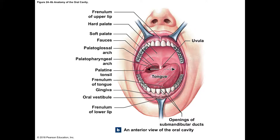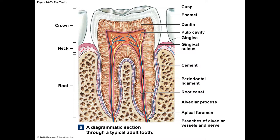Let's look at the teeth. This picture will be on your lab exam so you have to know these structures. The tooth itself is divided into three sections. Anything above the bone is called the crown. Right at the bone is called the neck. Anything below the neck is called the root.